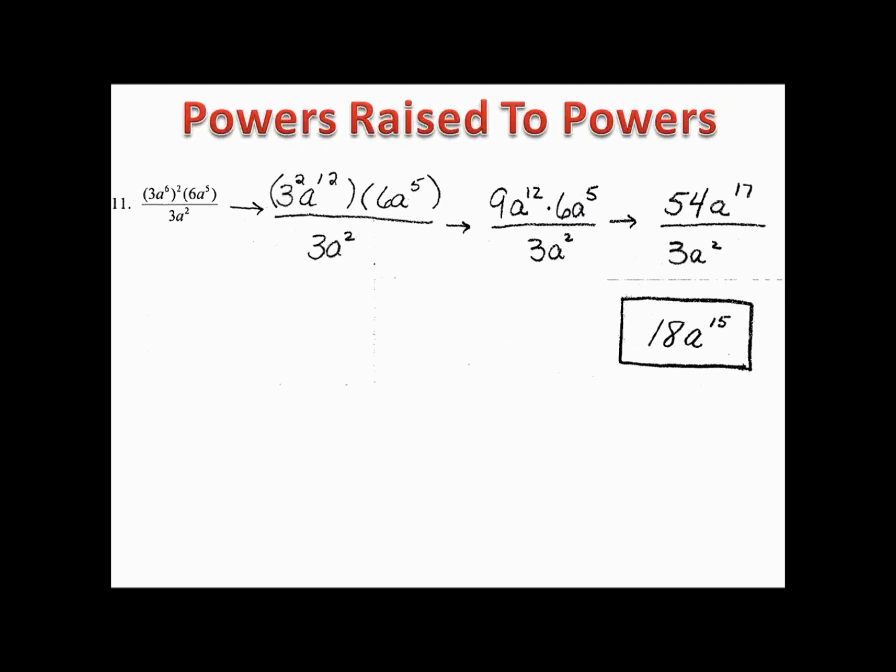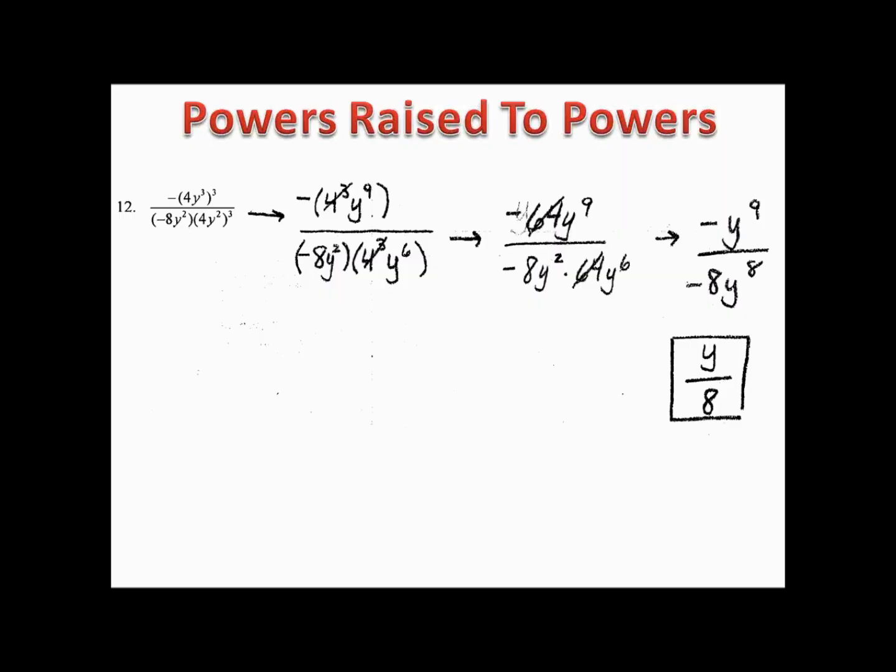Example twelve is similar — please pause the video and give it a try. In the top, we multiply each exponent by the 3 on the outside, giving us 4³y⁹. In the denominator we have negative 8y², and then we distribute the 3 from (4y²)³ to get 4³y⁶. Simplifying: in the denominator we add exponents, then subtract to divide, and we end up with y over 8.